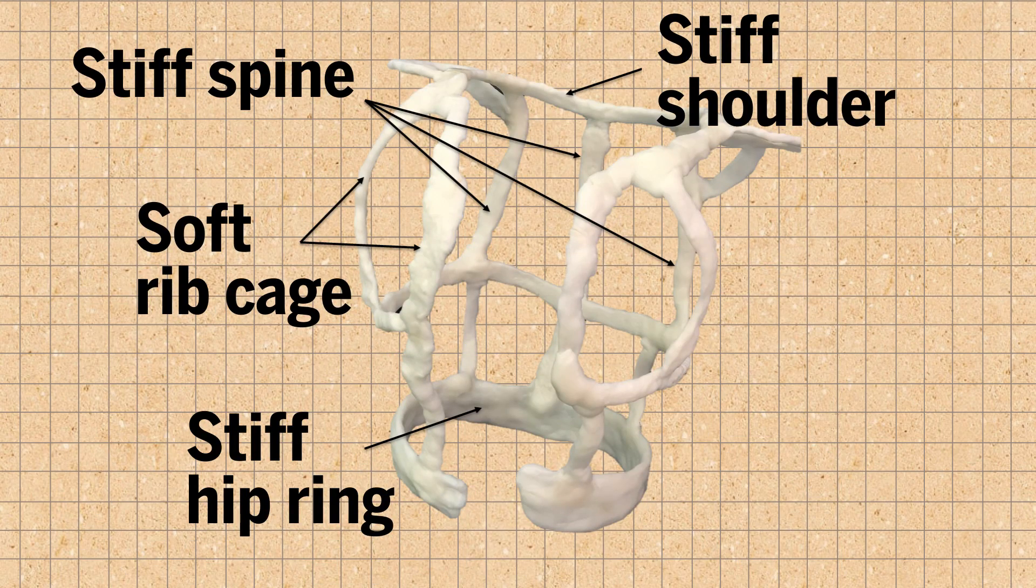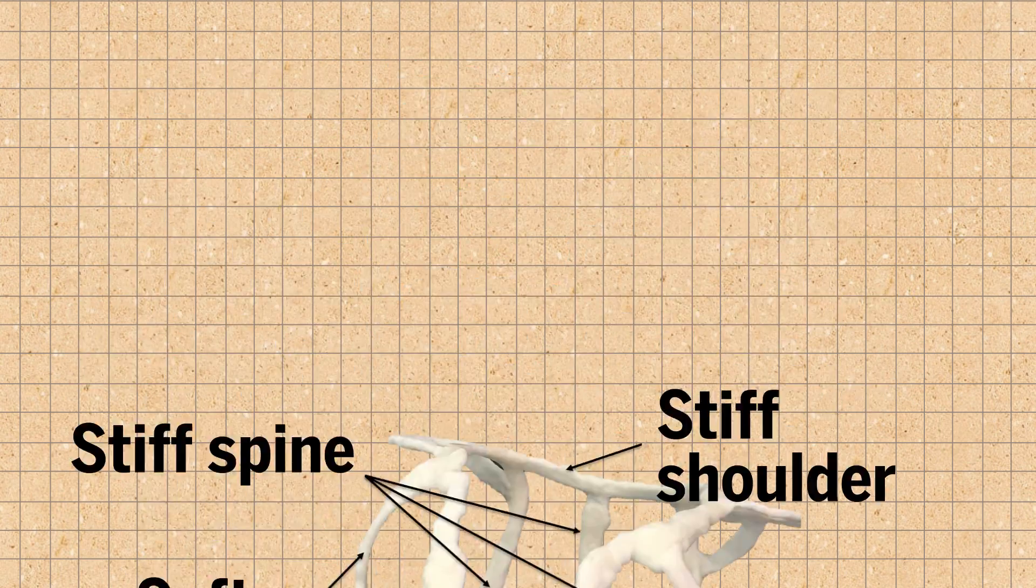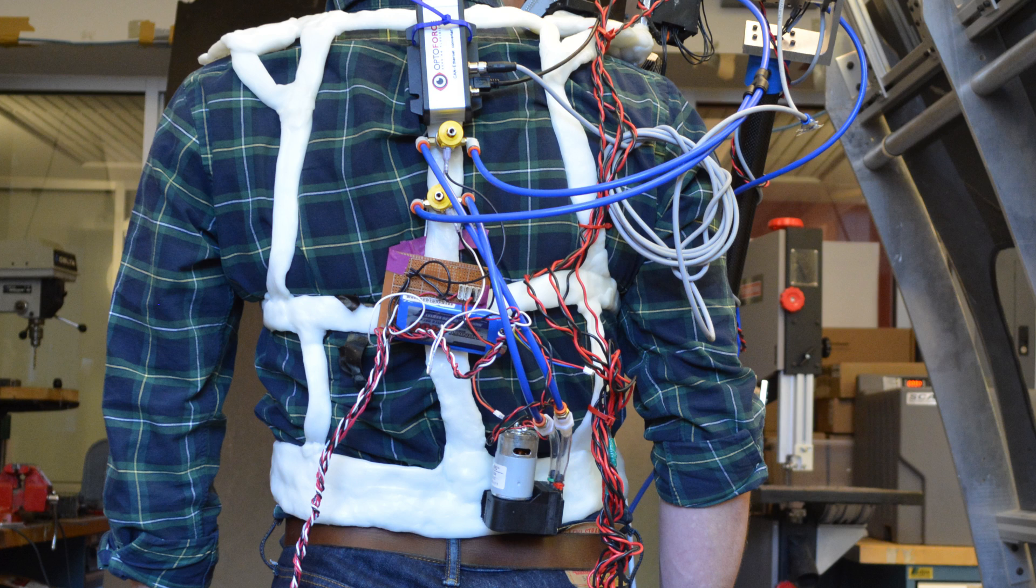The body brace is soft and stiff in different regions for both comfort and so the user can sense the arm's load.